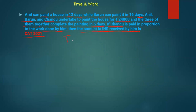We assume total work = 192 units (LCM of 12, 16, 6). Anil's efficiency = 192 divided by 12 = 16 units per day. Varun's efficiency = 192 divided by 16 = 12 units per day. Together A plus B plus C complete in 6 days, so combined efficiency = 192 divided by 6 = 32 units per day. Charu's efficiency = 32 minus (16 plus 12) = 32 minus 28 = 4 units per day.